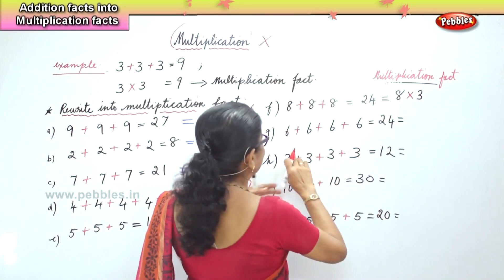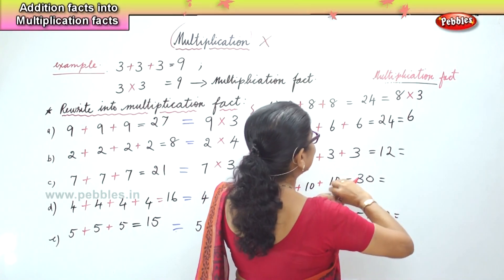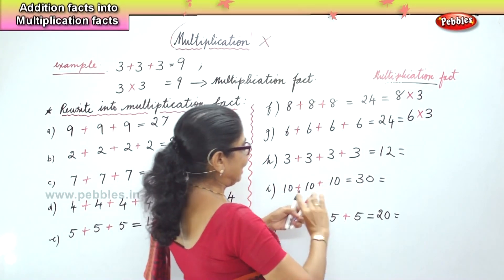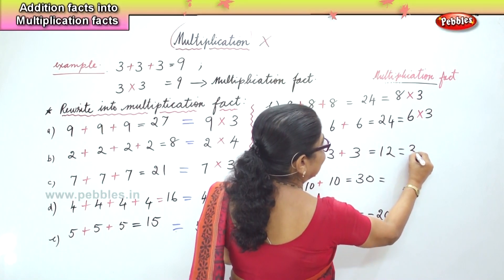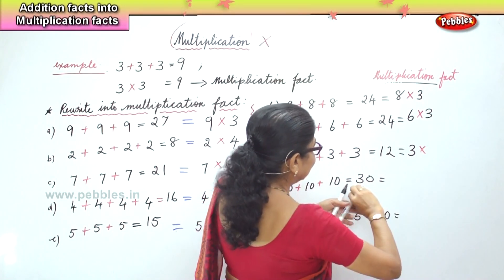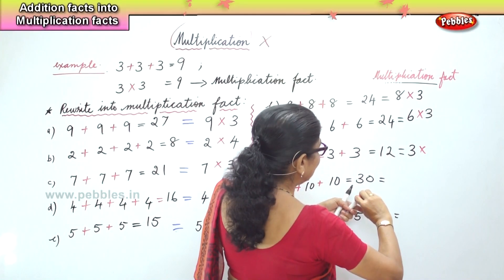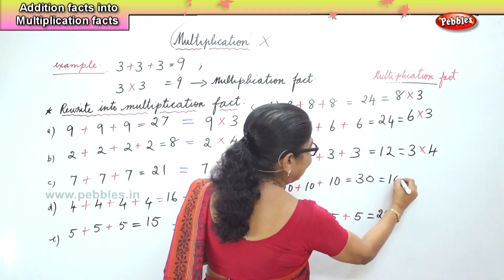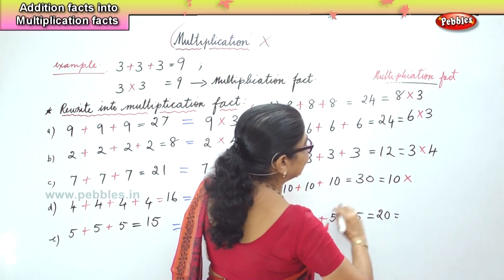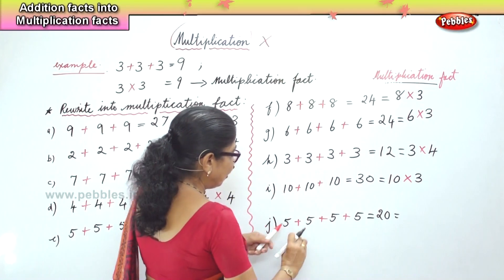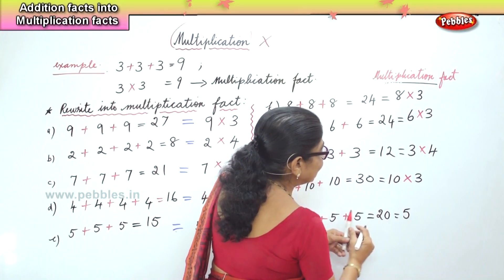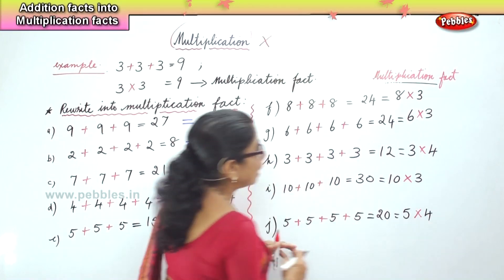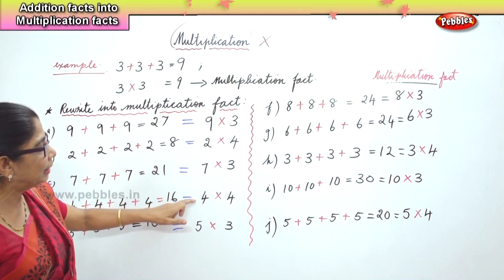Six, how many times? Three times — six three times. Three, four times — three fours are twelve. Ten, how many times? Three times — ten three times is thirty. Five, how many times? Four times. So all these are multiplication facts.